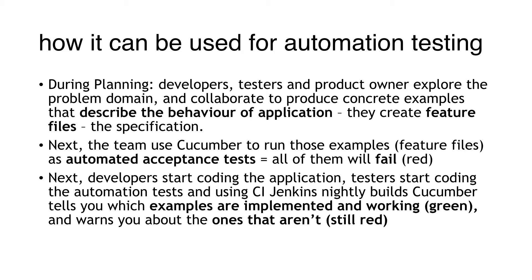When you have the first version of tests, they should be integrated into continuous integration and nightly builds. At the beginning all tests will fail because there is no application code and no automation code. But during the iteration, as developers start coding the application and QA testers write supporting Java code for Gherkin, more and more tests become green, and ideally at the end of the iteration everything should be green.